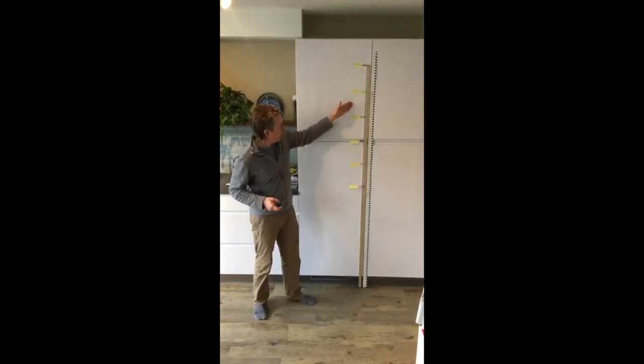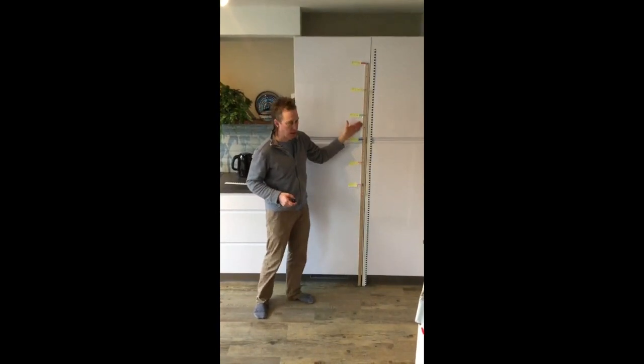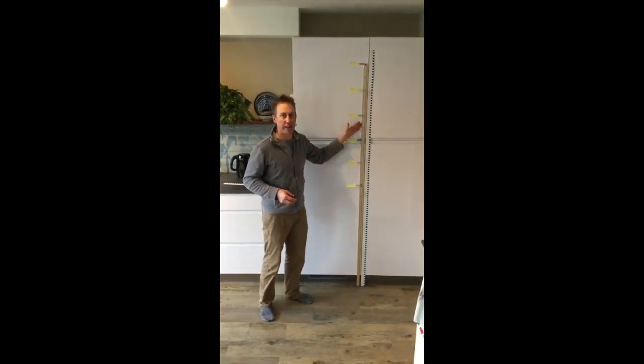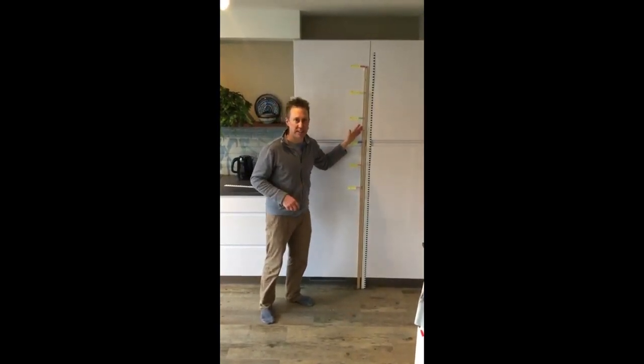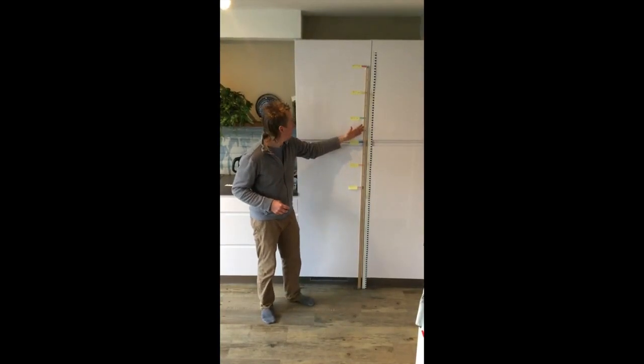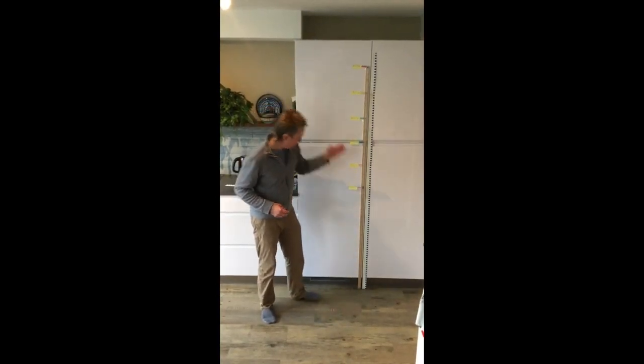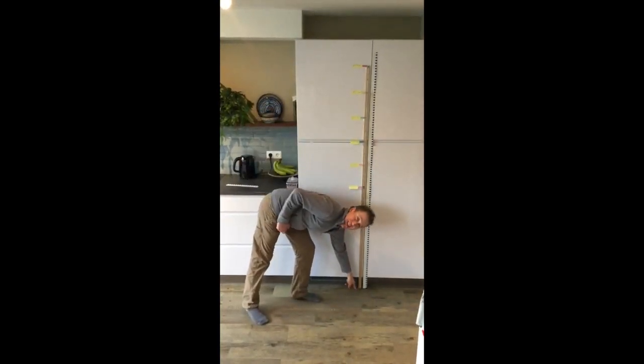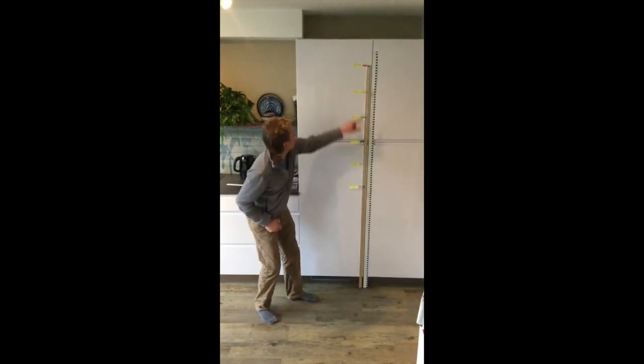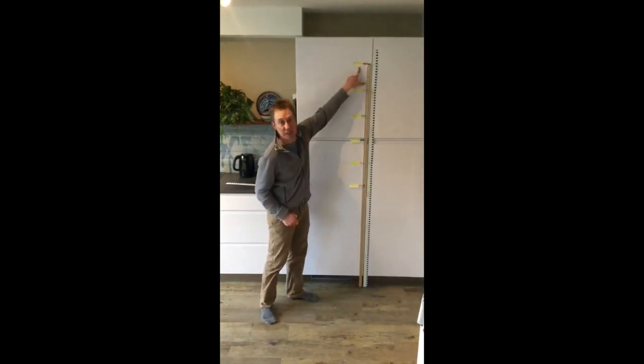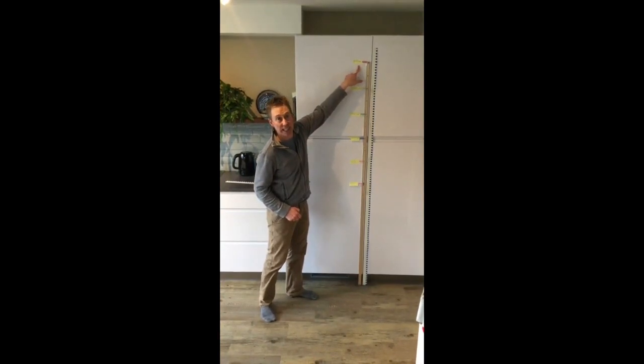So over here, I have some meter sticks and some rulers taped up behind me, so we can make some accurate measurements and measure with precision, just like a mathematician would do. And what we have is, down here, I started from zero centimeters from the floor, all the way up to 200 centimeters, which is two meters in height.